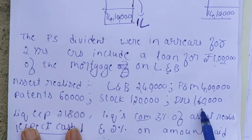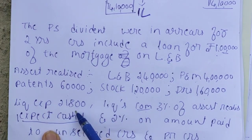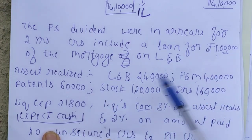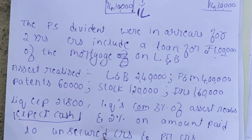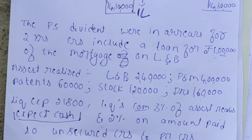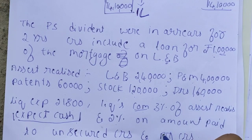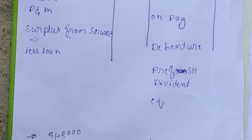Asset realization: land and building, plant and machinery, patents, stock, debtors. Liquidation expenses amount to Rs.21,800. The liquidator's commission is 3% on assets realized except cash, and 2% on amounts paid to unsecured creditors and preferential creditors. Commission is not given on secured creditors — only on unsecured and preferential creditors.